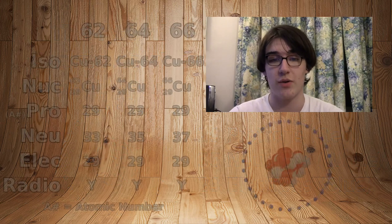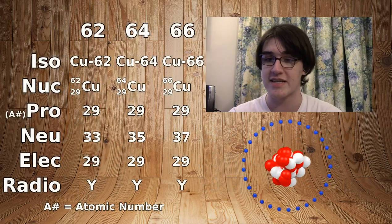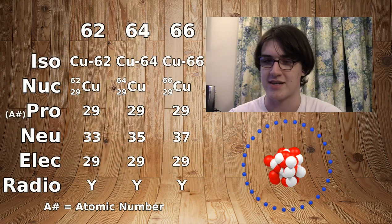However, there are more than just two isotopes of copper. Remember, the ones listed in the table below are copper 62, copper 64, and copper 66.